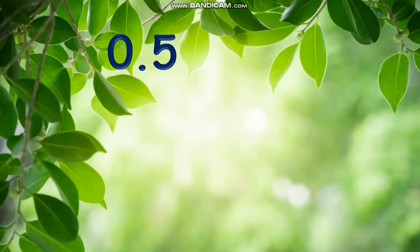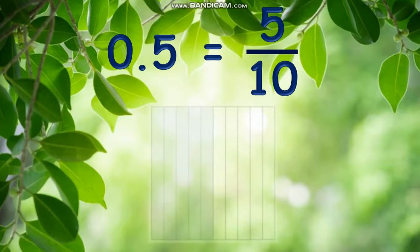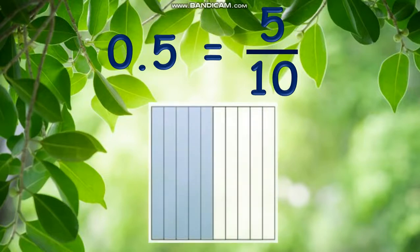One way to visualize a decimal is to use blocks or grids. An example is this diagram. Since 0.5 in a fraction is 5 tenths, we simply visualize it by a fraction of 5 tenths: 5 shaded parts out of 10 equal parts.